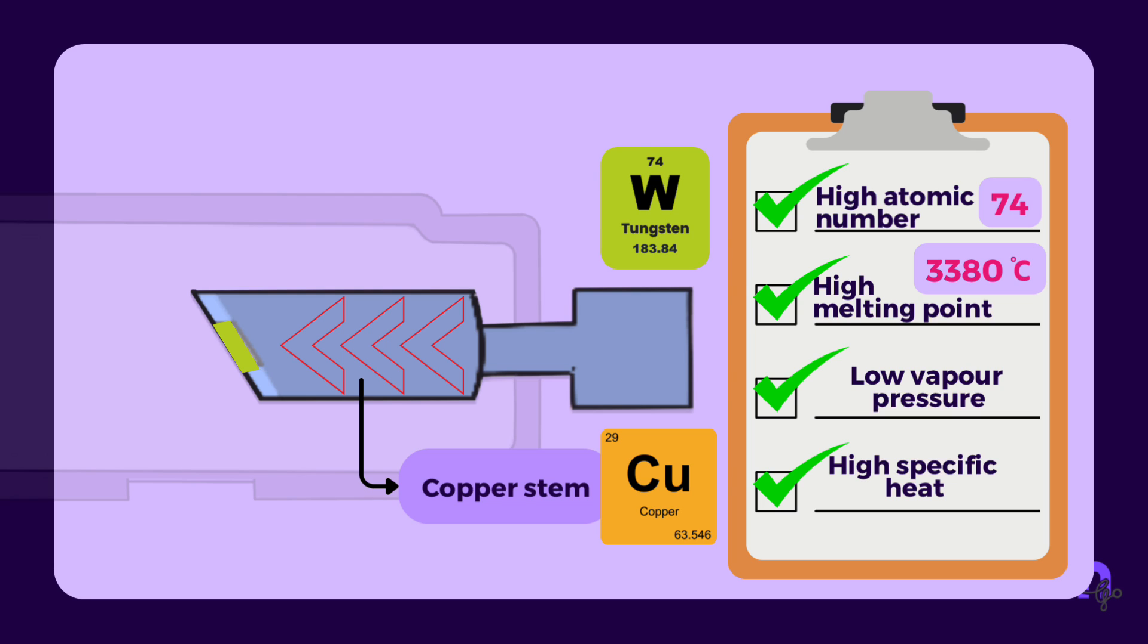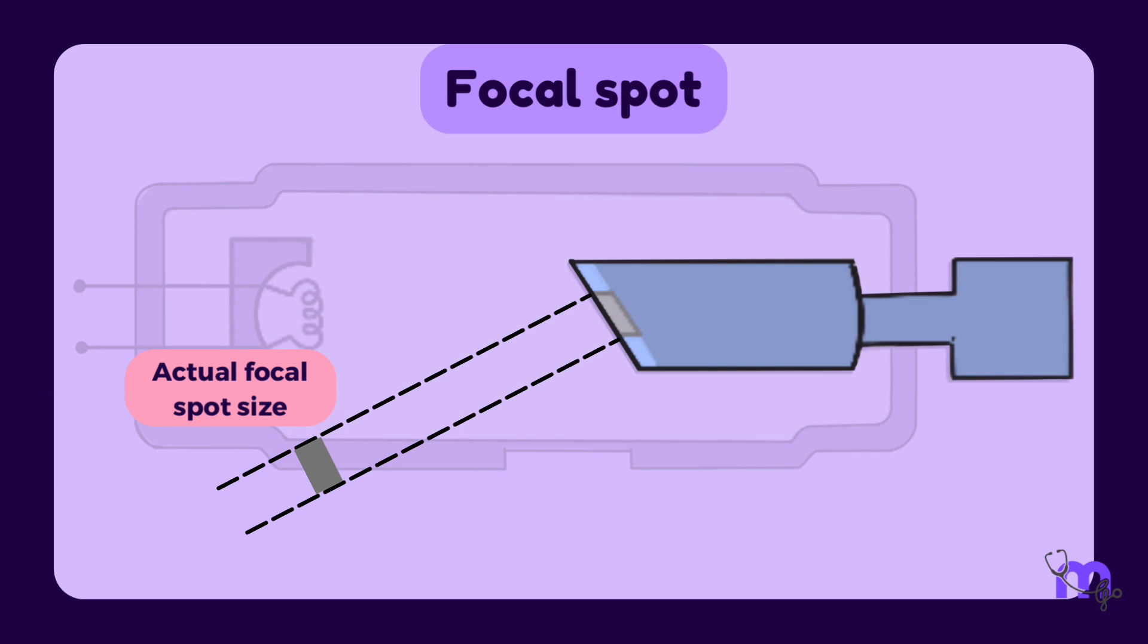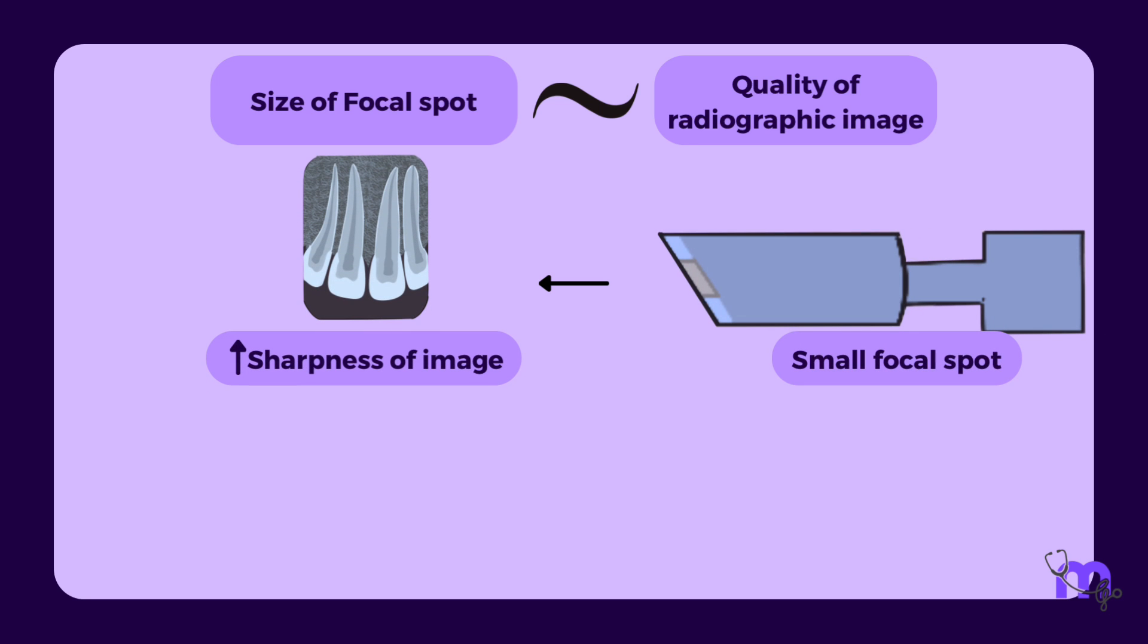Let us now discuss a very important area of the anode called the focal spot. This is a region on the tungsten target onto which the focusing cup directs the electrons. The actual size of the focal spot is one millimeter by three millimeter. We must keep in mind that the size of the focal spot influences the quality of the radiographic image. This means a small focal spot increases the sharpness of the image.